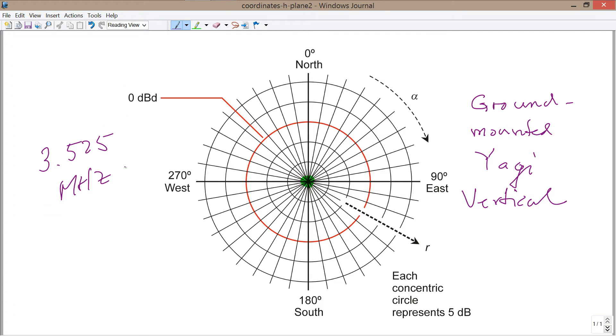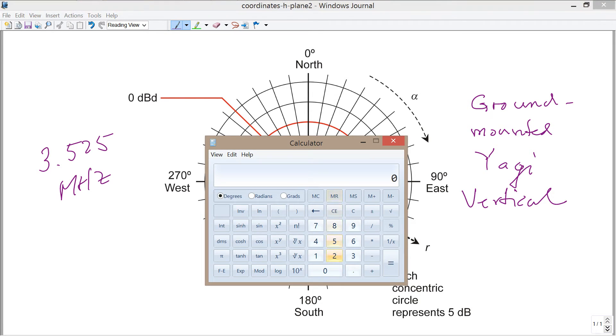How tall is that thing going to be? Well, you can actually go ahead and calculate that. 234 divided by 3.525 is going to be about 66.3 feet, about 66.5 feet somewhere in that vicinity. Now, this is a quarter wavelength vertical antenna.